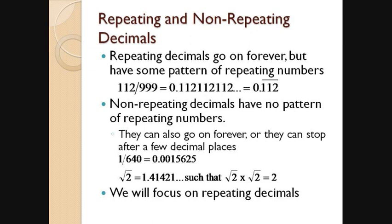Non-repeating decimals can either be finite, so they can have a finite number of points after the decimal, like we saw in one-half, one-tenth, or one over 640. They can also go on forever but never have a repeating pattern. So here's this weird number, the square root of 2, which is about 1.414, such that when you multiply it with itself, you get exactly 2. But for the purpose of this talk, I will be focusing on repeating decimals.